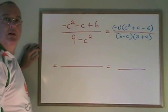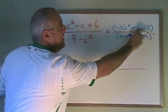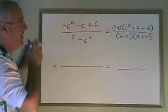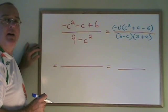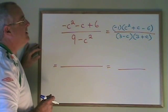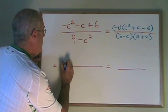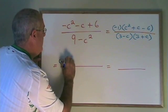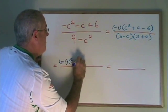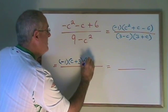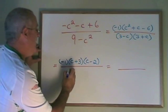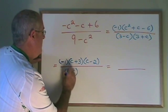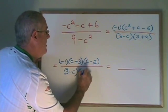Now I'm going to do the simple trinomial method to what remains in the bracket here. What two numbers multiply to give negative 6 and add to give 1? They are positive 3 and negative 2. So I have minus 1, c plus 3, c minus 2 on the top, and I have 3 minus c, 3 plus c on the bottom.